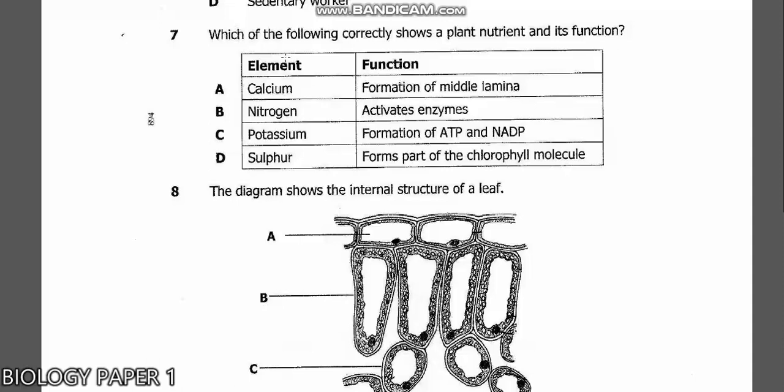Question 7: Which of the following correctly shows a plant nutrient and its function? We have calcium formation of middle lamella, nitrogen activation of enzymes, potassium formation of ATP and ADP, sulfur forms part of the chlorophyll molecule. The answer is A - calcium forms part of the middle lamella. Make sure you read more notes on the function of plant nutrients.